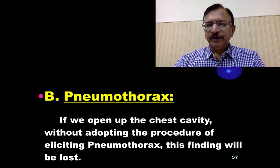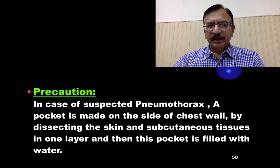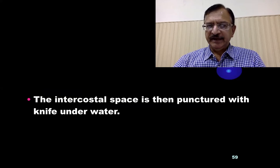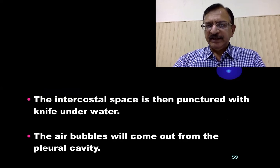In pneumothorax, if you open the chest cavity without adopting the proper procedure, this finding can be missed. The precaution is: if you suspect pneumothorax, make a pocket on the side of the chest wall by dissecting the skin and subcutaneous tissues to form a flap. Fill this pocket with water, then thrust a knife through the intercostal space into the chest cavity underwater — air bubbles will come out from the pleural cavity.